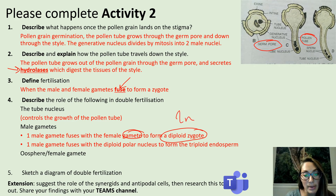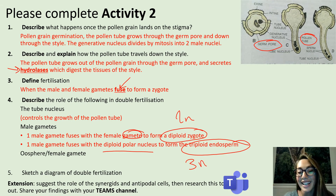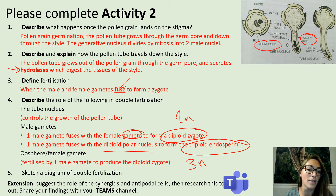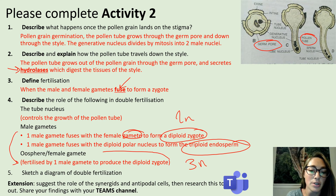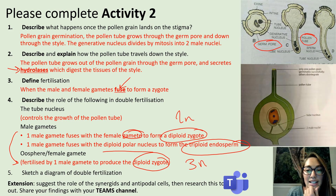The other male gamete fuses with the diploid polar nucleus to form the triploid endosperm (3n). Triploid means three sets of chromosomes. The oosphere, the female gamete, is fertilized by one male gamete to produce the diploid zygote. Sketch a diagram of double fertilization — you should have something from the previous slide, and there was an extension question about the synergids and antipodal cells.